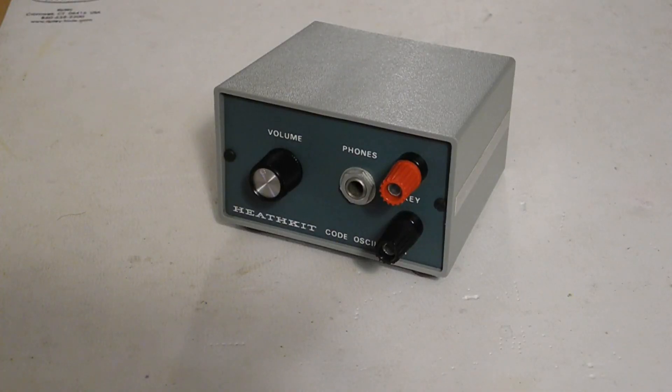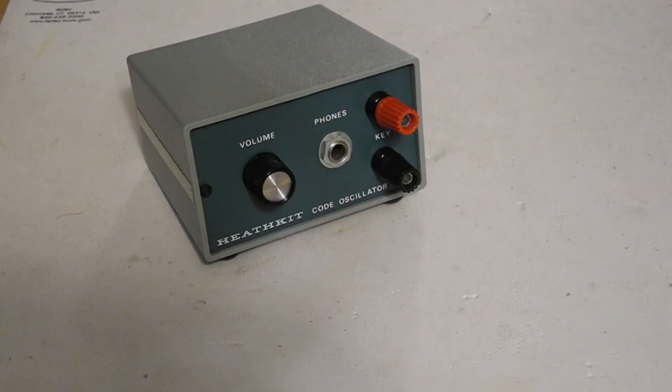The front panel has terminals for the key that accept wires or banana jacks. As mentioned you could also connect a suitable transmitter here in which case polarity would be important. Headphones can be connected to the quarter inch mono jack. It was designed for headphones of 600 ohms or greater impedance. With no headphone plugged in sound would come from the small internal speaker. The volume control adjusts sound level. There's no power switch as the unit doesn't draw any power unless the key is down.